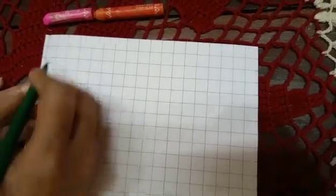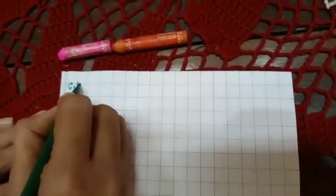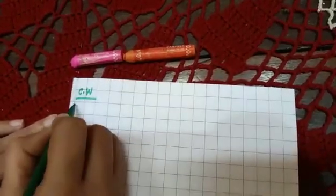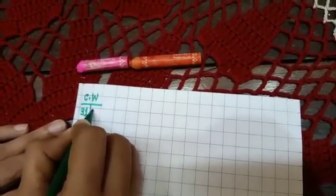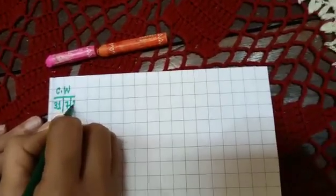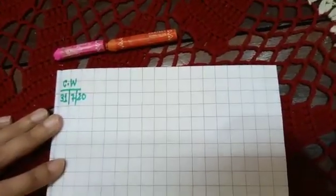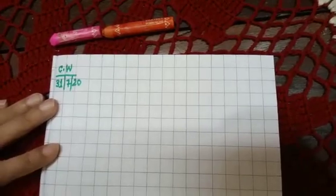Now here you will write CW date. Today's date is 31, 7, 20.